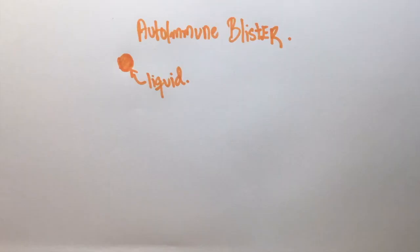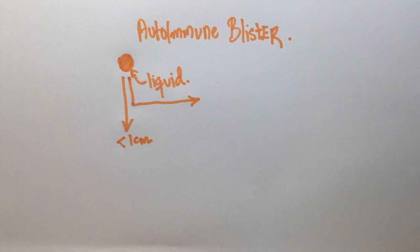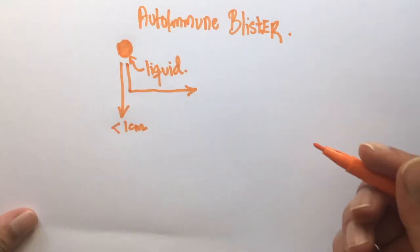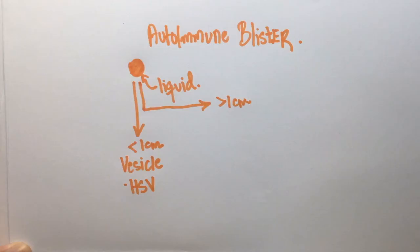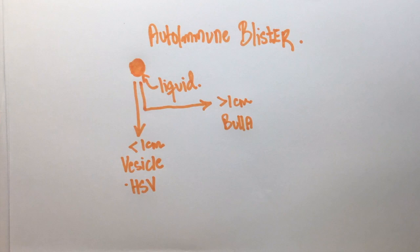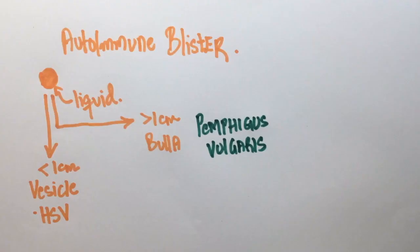A blister is basically a lesion which has fluid filled in it. Blisters which are less than 1 centimeter in size are called vesicles — vesicles are majorly seen in herpes. A blister which is greater than 1 centimeter is called a bulla. Examples of bullae are pemphigus vulgaris and bullous pemphigoid.